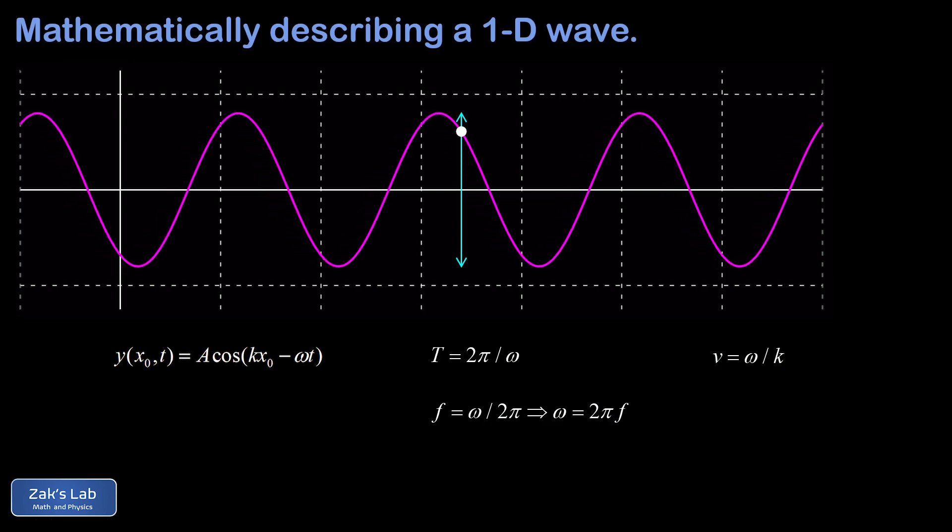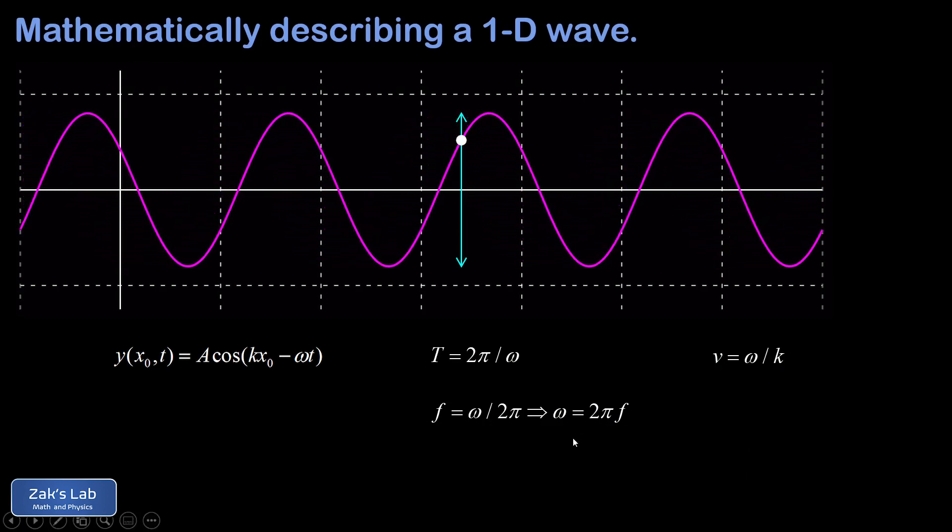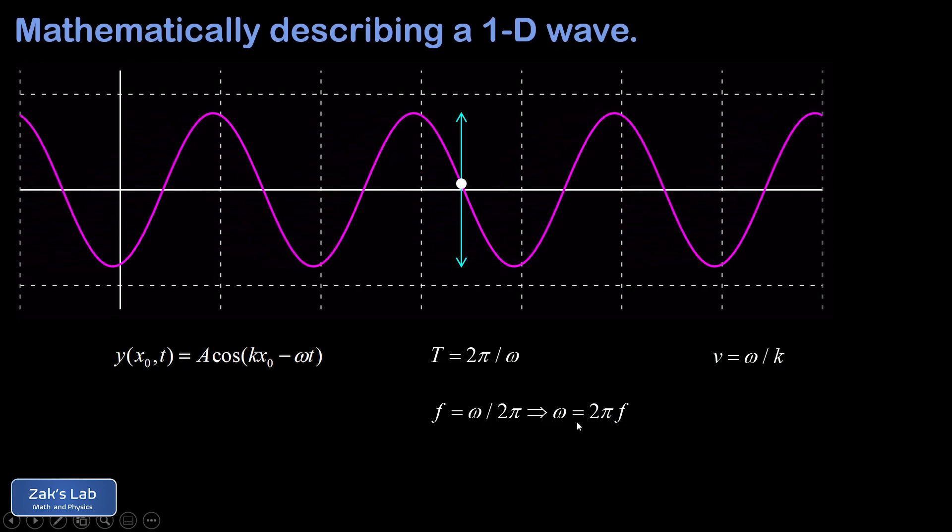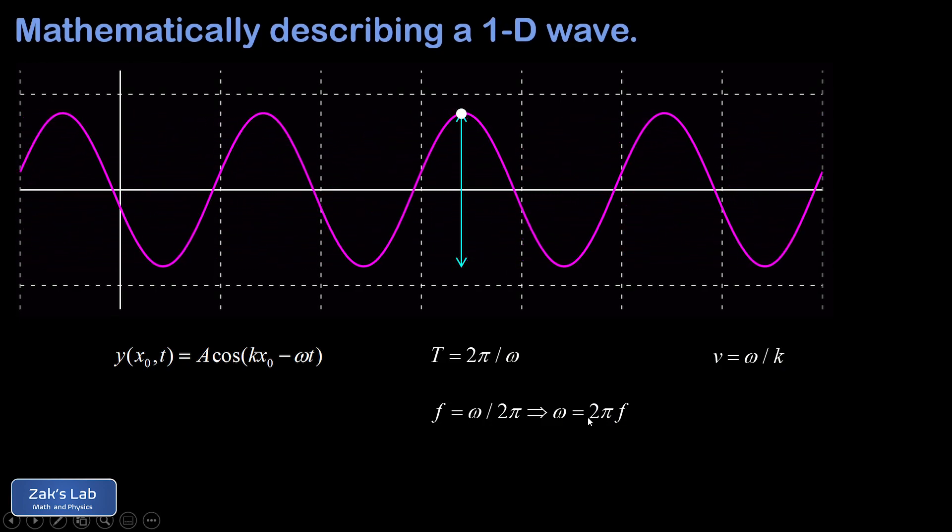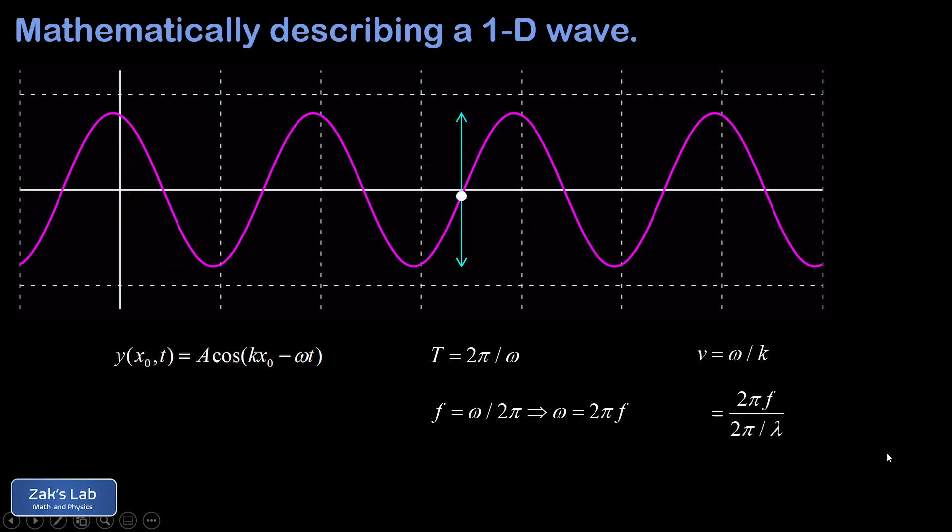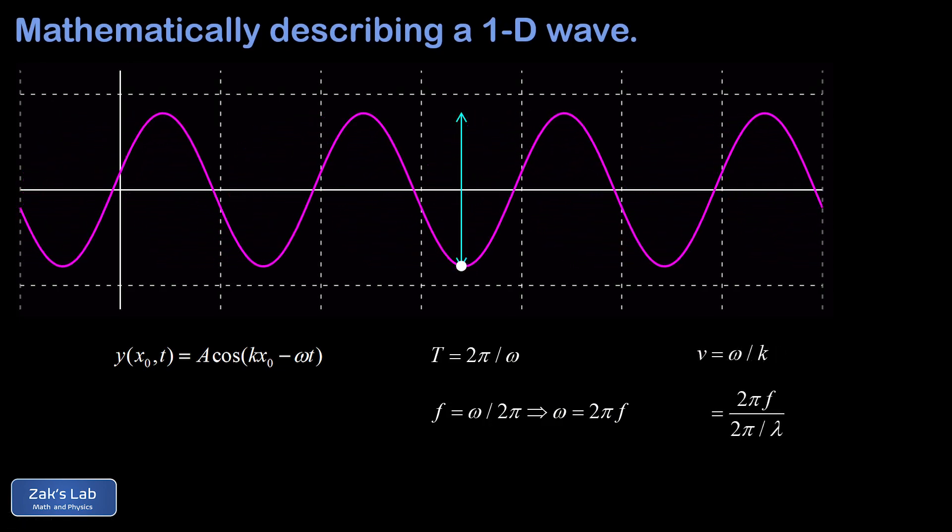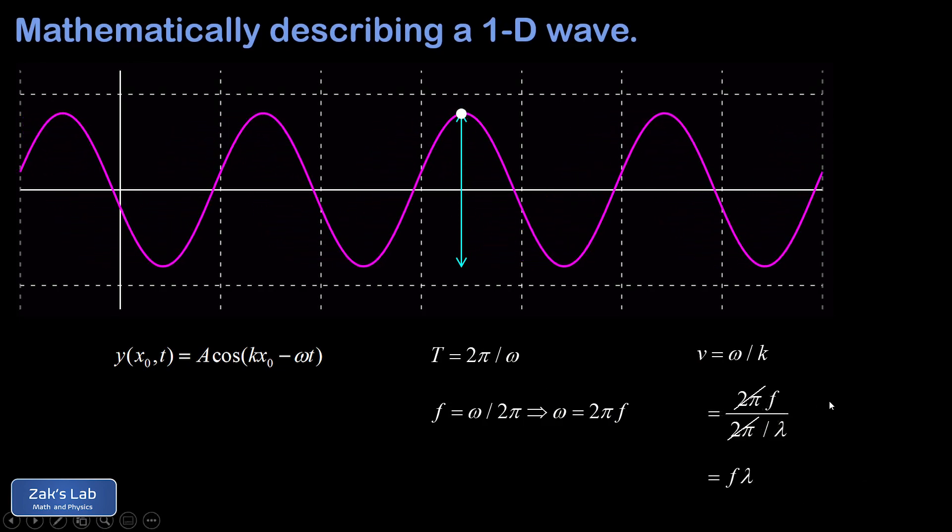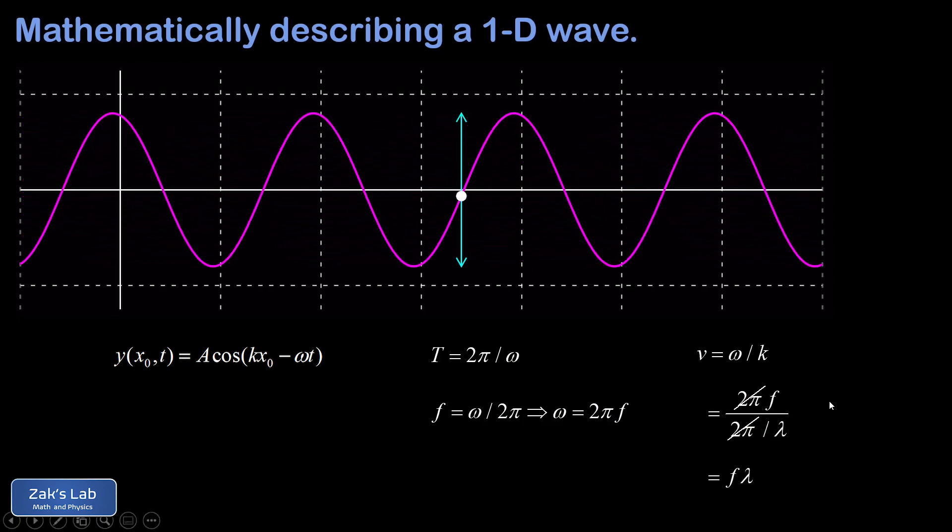If we start with v equals omega over k, well, we can replace the omega with 2π times the frequency. And then remember that k can be replaced with 2π divided by the wavelength. Now we see that our factors of 2π cancel. And dividing by the reciprocal of lambda just gives me a lambda in the numerator. And we arrive at the old formula v equals f lambda.